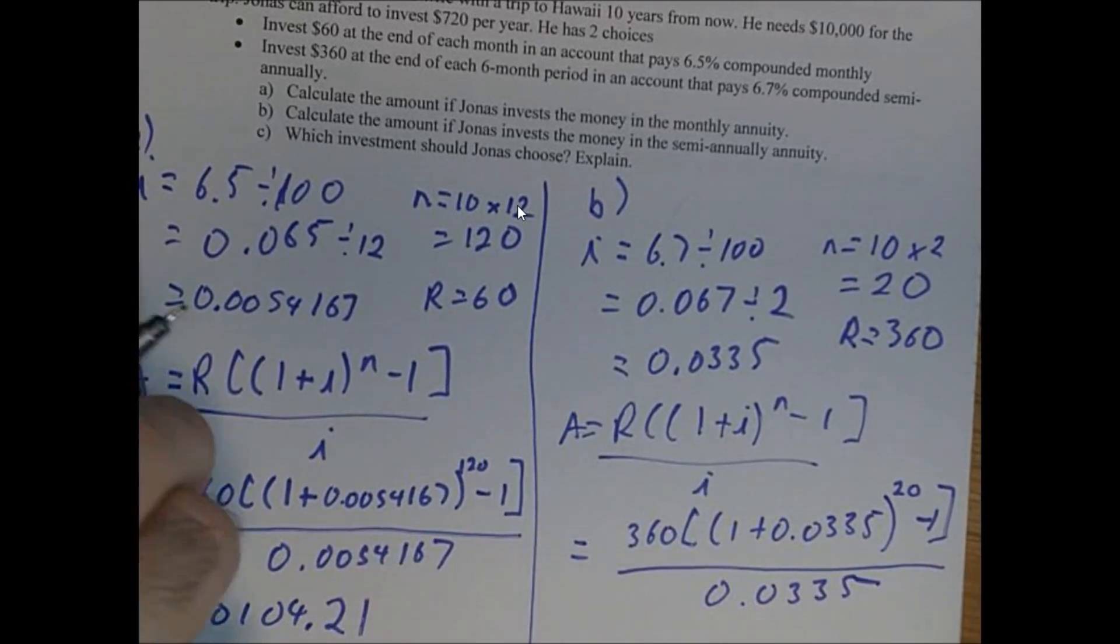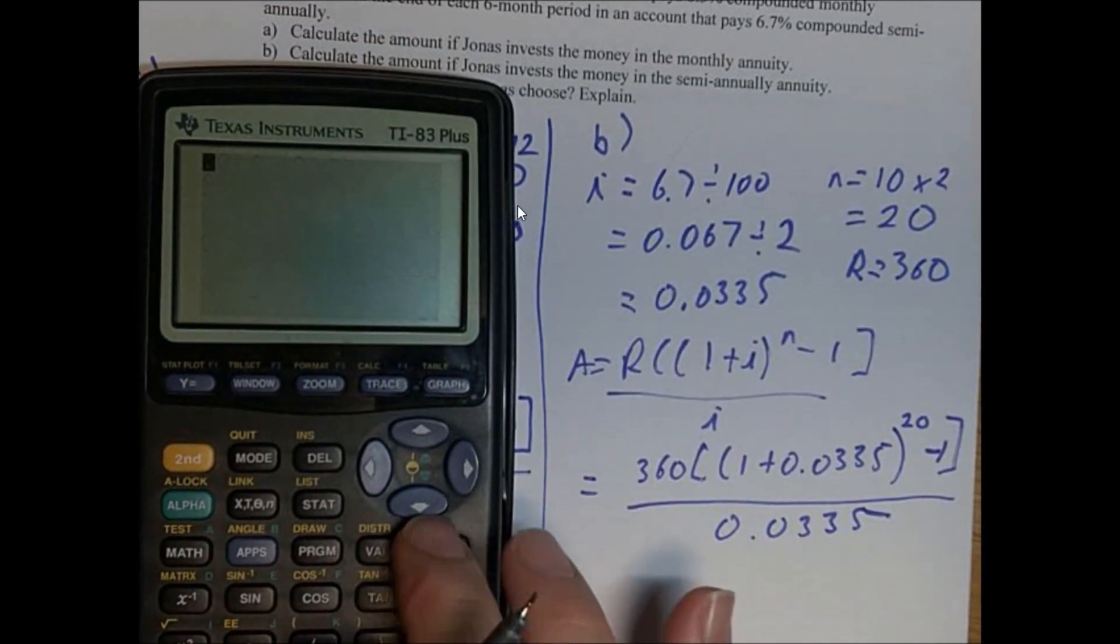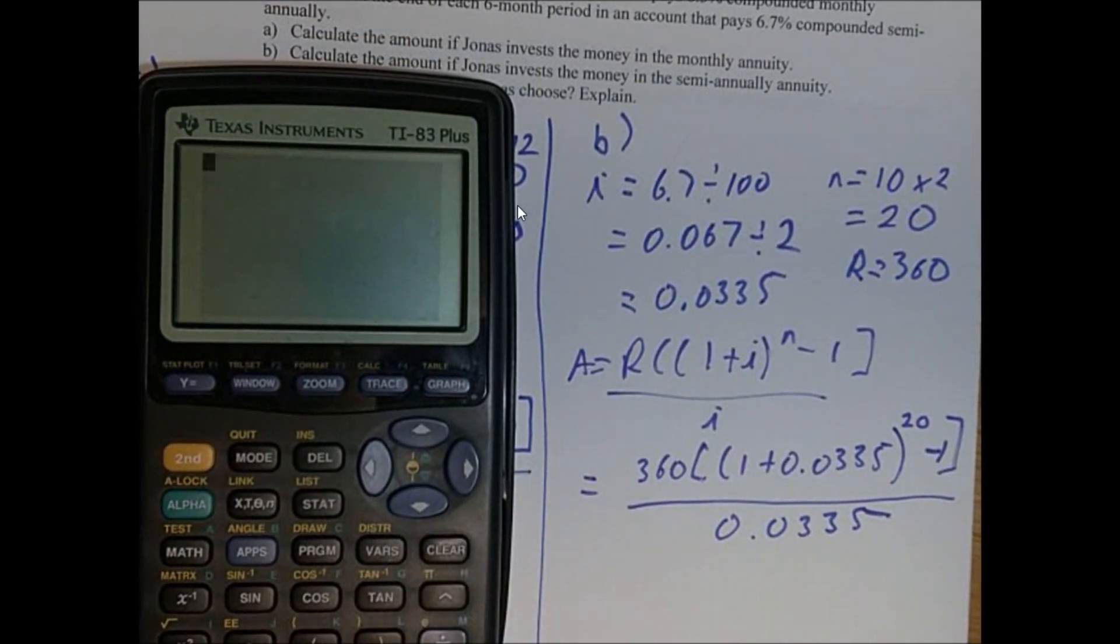Now we get our trusty little calculator out to find the answer. So we'll put it up here. We'll clear what we had before. So we got 360 bracket, bracket one plus 0.0335, close the bracket to the power of 20, minus one, close the bracket.